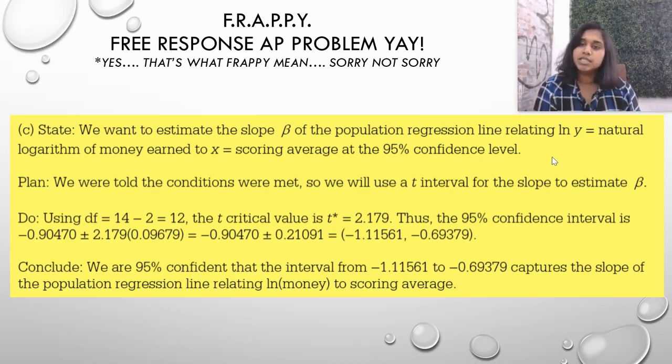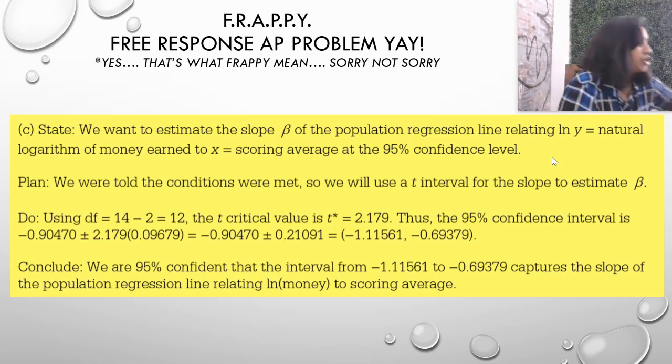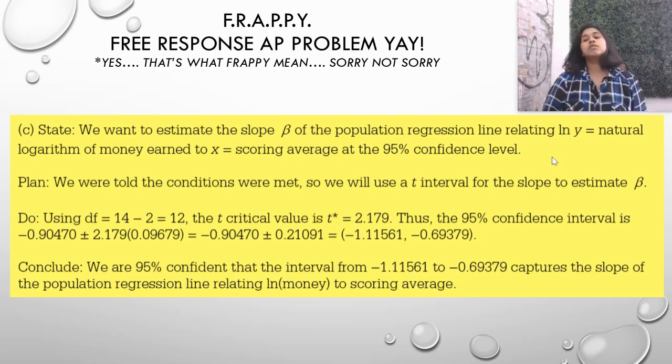Plan we were told conditions were met. So, name that interval. We use a T interval for the slope to estimate beta. That's always. You're always going to use a T interval for those shifted log or transformed questions is what I meant to say.